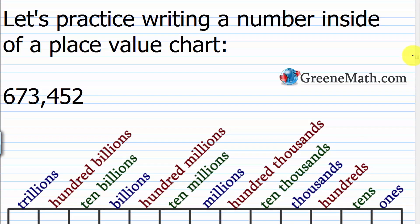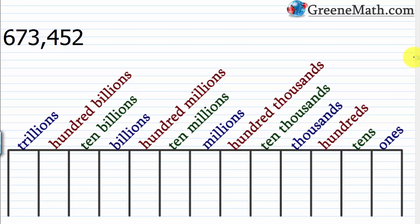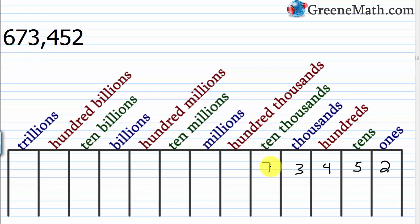Let's practice writing 673,452 in the place value chart. Take the rightmost digit and put it in the rightmost column: 2 in the ones, 5 in the tens, 4 in the hundreds, 3 in the thousands, 7 in the ten-thousands, and 6 in the hundred-thousands.